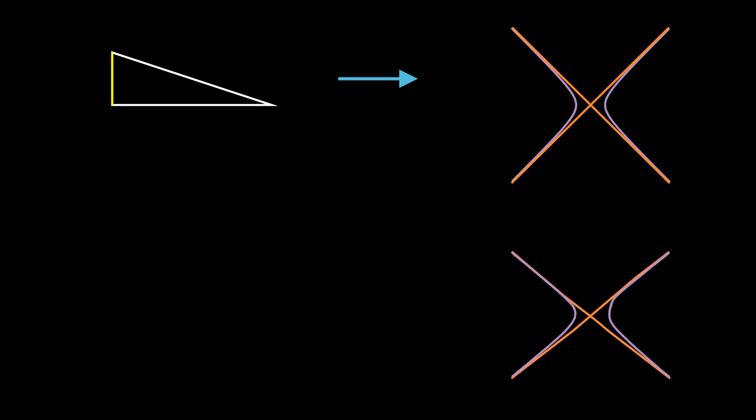Our asymptotes for these hyperbolas we've been studying are at right angles. What would be needed to create hyperbolas with different angles at the asymptotes?